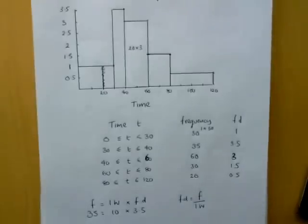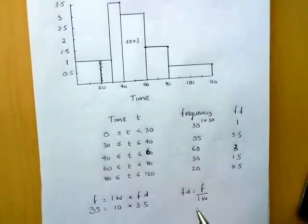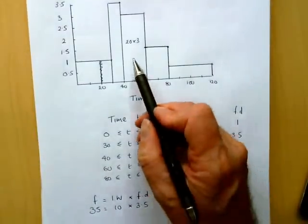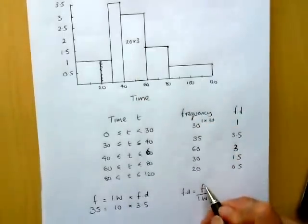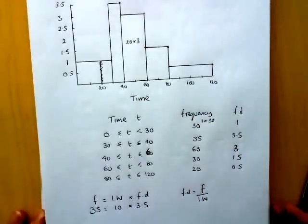So if you're trying to find missing frequencies, you need frequency density times interval width. And if you need frequency densities to complete your diagram, then you take the frequency and divide that by the interval width. That's it for that question.